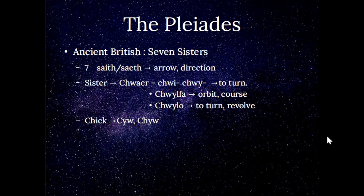So why seven sisters? Seven we've already seen is an arrow — figuratively a direction. A sister implies the root word that makes many words in Welsh meaning to turn, for example 'orbiter' and 'to turn or revolve.' So we have this sense of orbiting and revolving around a direction, which is exactly what our solar system does around the Pleiades. A 'chick' points to the same root word.